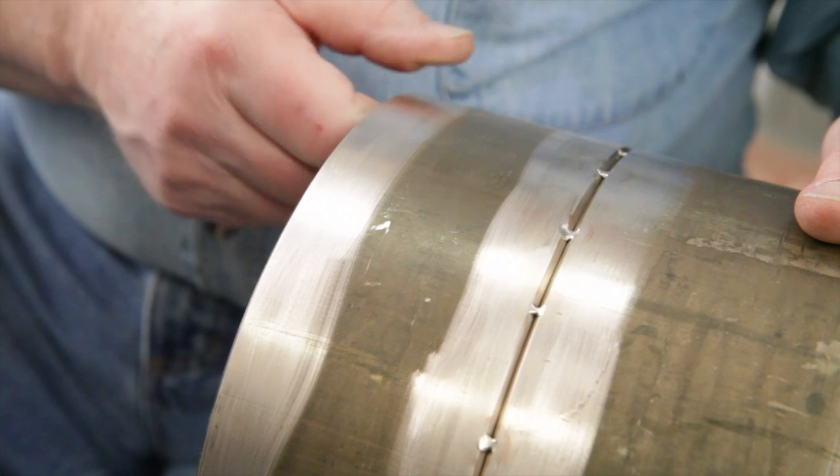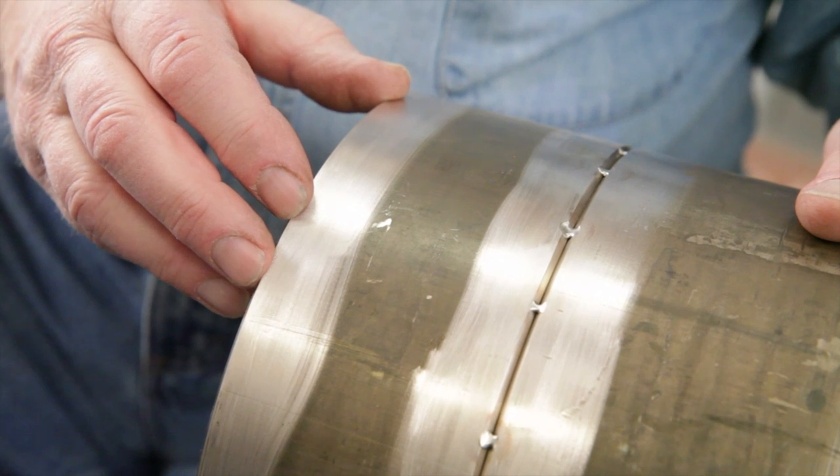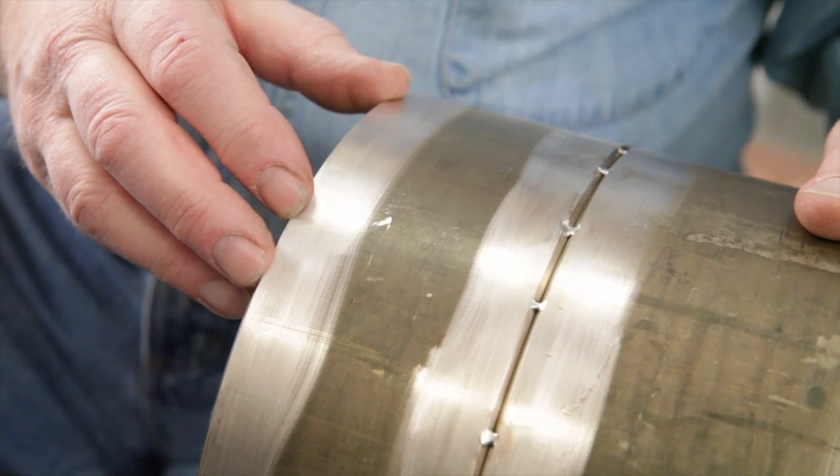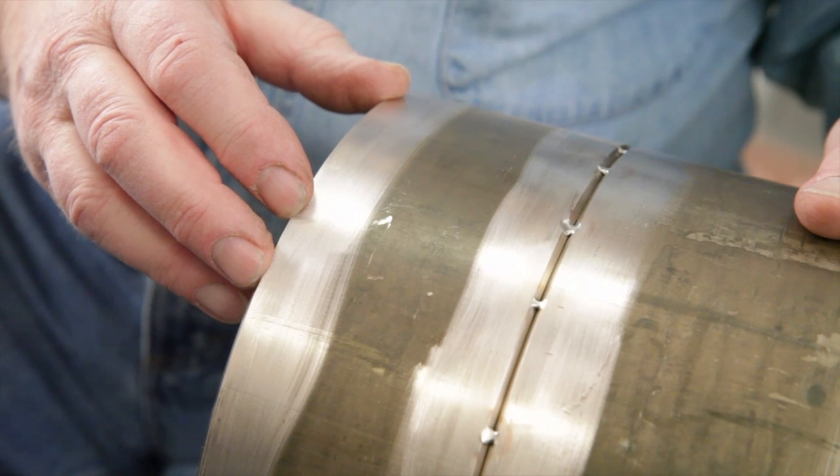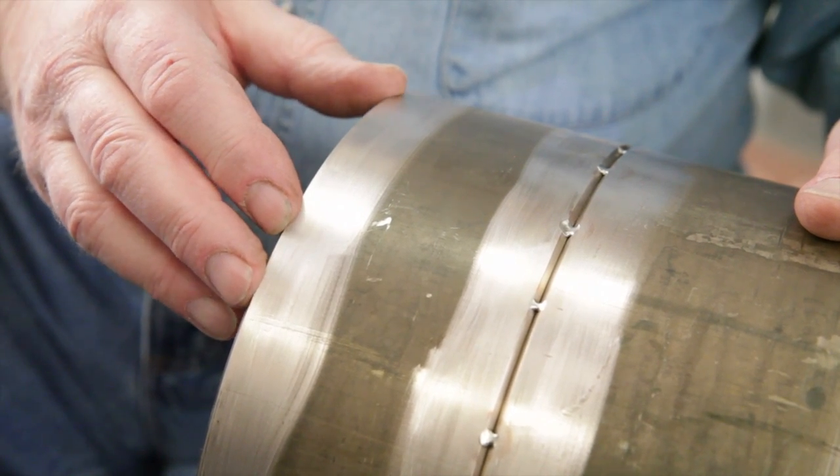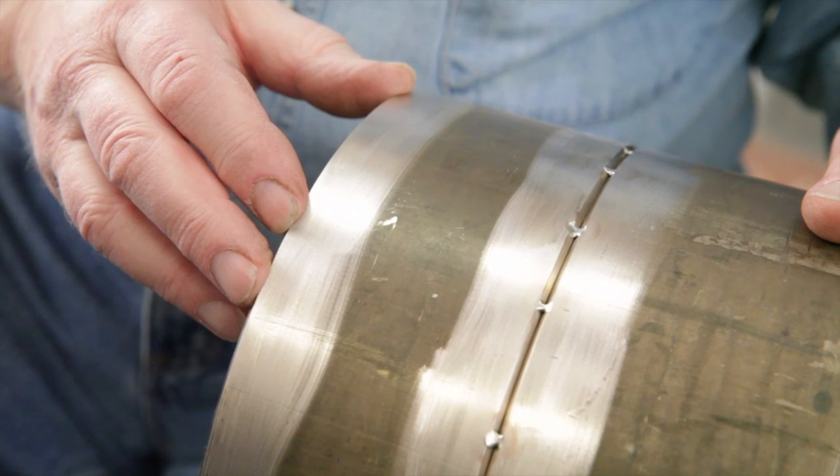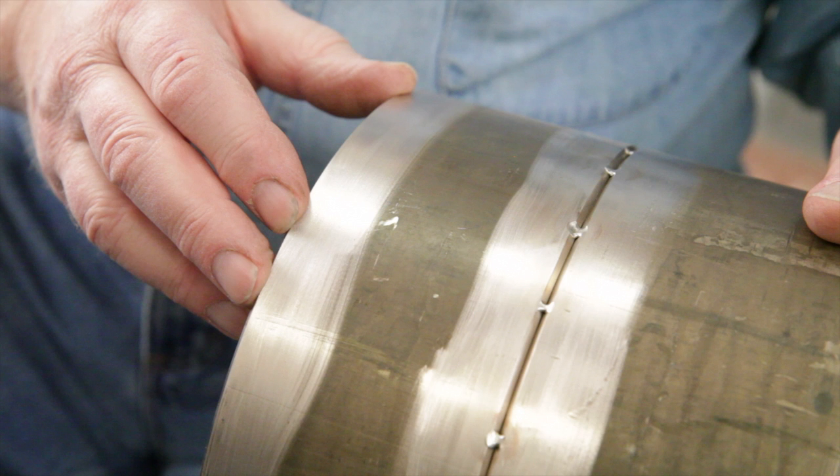The root pass technique we'll use on this joint will be an open root joint with hand-fed filler material. This is commonly used on stainless steel and other pipe alloys. The root pass technique is an area of flexibility, and best results are often obtained using the technique the welder is most familiar with, allowing for differences in fluidity.